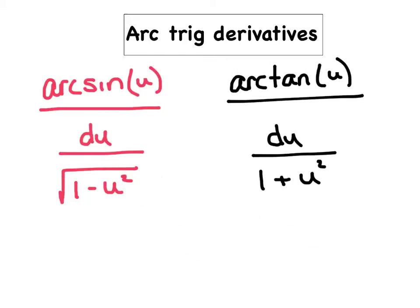Let's start off with our arctrig derivatives. We need to know the derivative of arcsin and arctan. Arcsin is du over the square root of 1 minus u squared — if you don't know that off the top of your head, it's time to get it on a flashcard and go through them every night. Arctan is du over 1 plus u squared. Arccosine is the same thing as arcsin, except because it's a 'c', we slap a negative in front of it — so arccosine has the negative du.